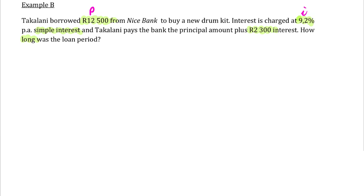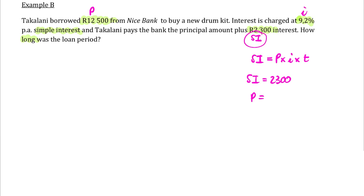This amount — 2,300 — is the interest that she's paid. The most straightforward way, because we are given just interest, is to use the formula that says simple interest equals the present value multiplied by the interest rate multiplied by time. In this case, the simple interest is 2,300 rand, the principal amount was 12,500 rand, the interest rate was 9.2 over 100 which is 0.092, and the time period is what we want to know.